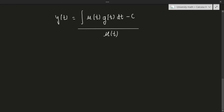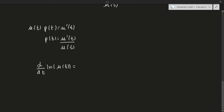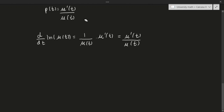We still have to figure out how to actually find mu of t. We know that mu of t times p of t equals mu prime of t, which means p of t equals mu prime of t divided by mu of t. Now, remember from calculus that the derivative with respect to t of ln of mu of t, by the chain rule, equals 1 over mu of t times mu prime of t — or in other words, mu prime of t divided by mu of t.